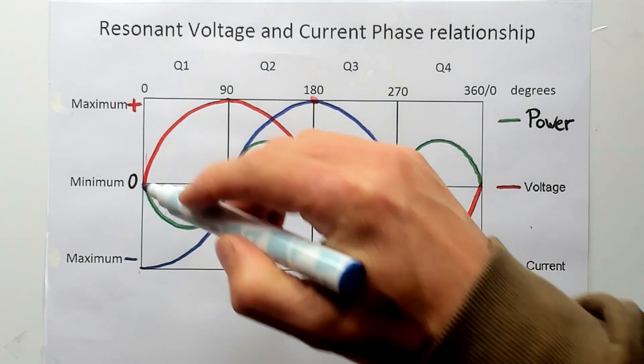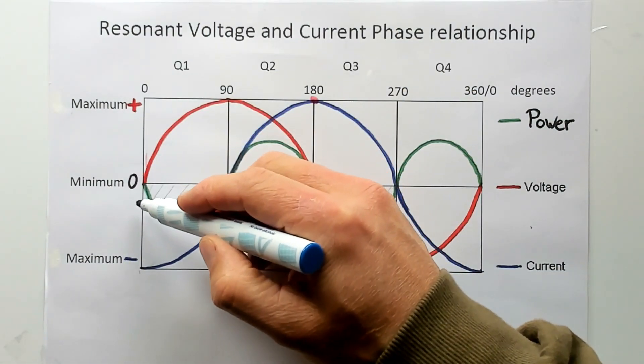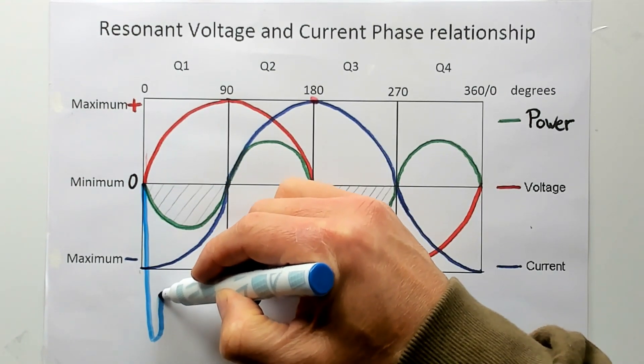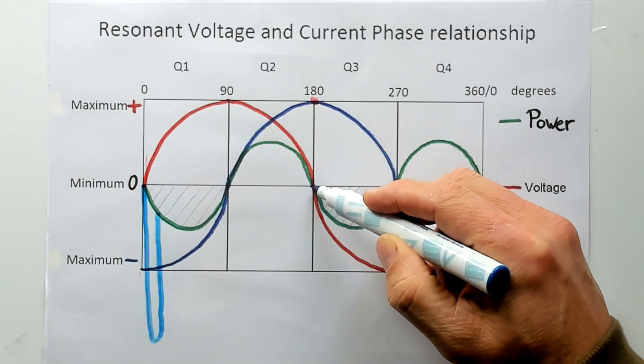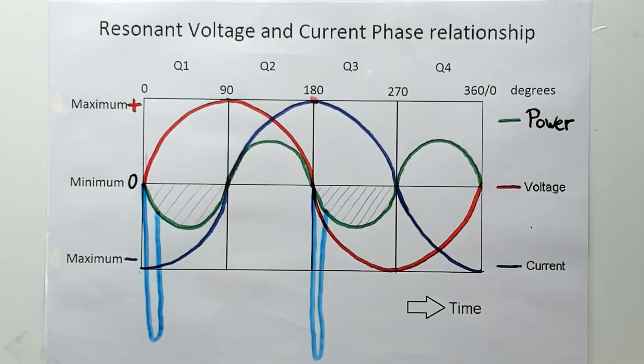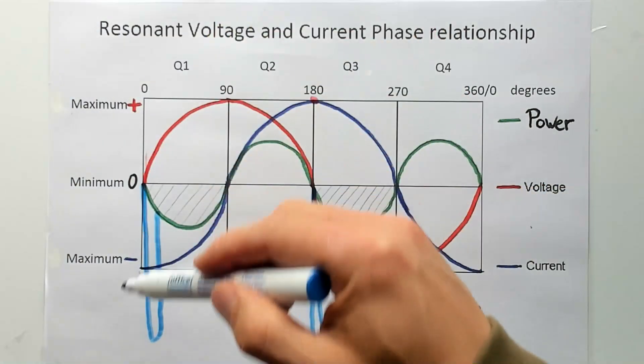The impulses will generate an extra power curve. Right here. And here.